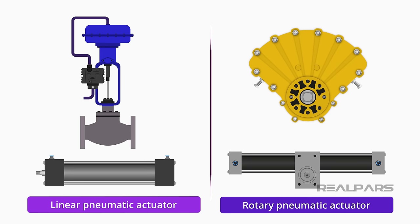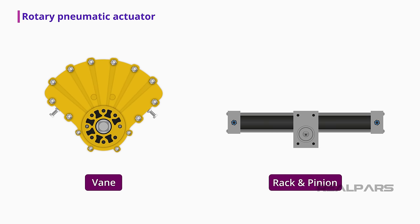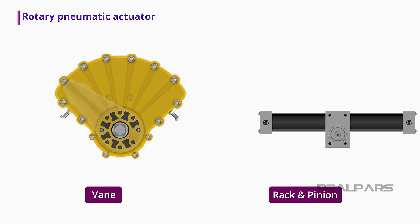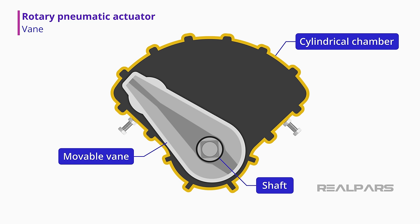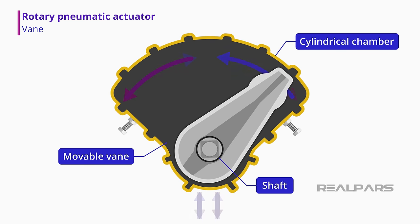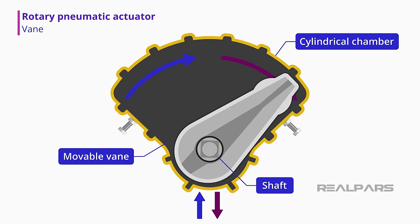Let's look at some examples of how rotary and linear pneumatic actuators are operated, as there are many different types of each. In the rotary pneumatic actuator category, the vane style and the rack and pinion style are very common. Vane actuators have a cylindrical chamber in which a movable vane is mounted on a shaft. Pneumatic air under pressure applied on one side of the vane causes it to rotate through its stroke.